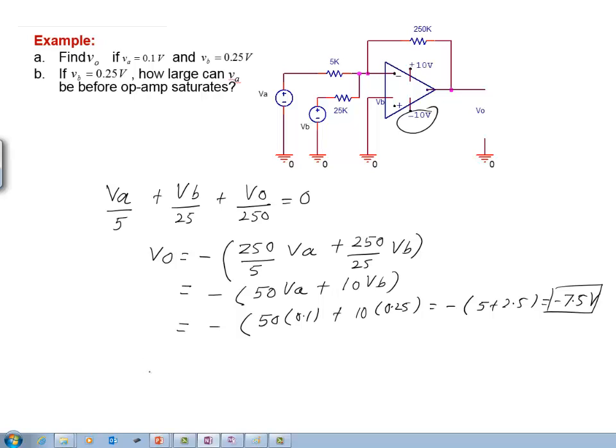For the second part, we have been asked to figure out how large can V A be before the amplifier saturates assuming that V B is held at 0.25 volts.